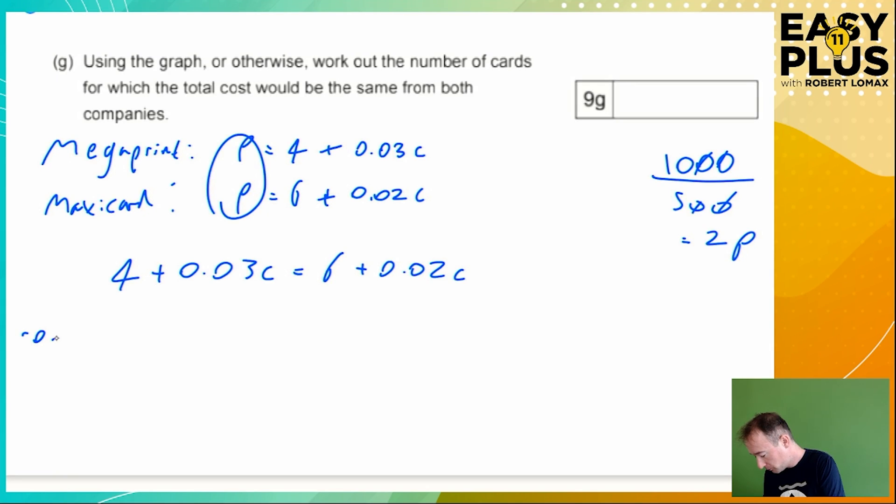So we're going to take away 0.02c from both sides. So on this side, we're still going to have four because we haven't done anything to the numbers without c's. We've got 4 + 0.03c - 0.02c. What's three take away two? It's one. So 4 + 0.01c equals six. And we've got rid of this because we've taken it away. So there's nothing left there. Equals six.